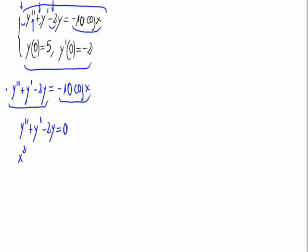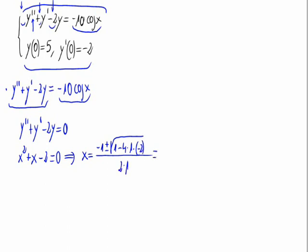So the characteristic equation is r² + r - 2 = 0. Now we have to obtain the roots from here using the quadratic formula: r = (-b ± √(b² - 4ac)) / (2a), which gives us (-1 ± √(1 + 8)) / 2.